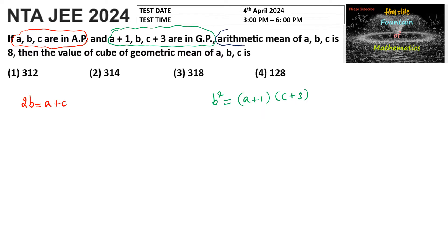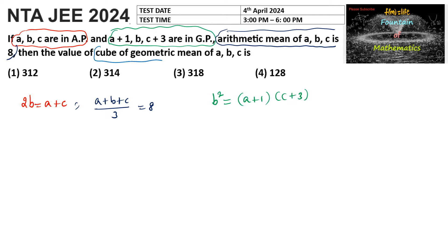Next, it is also given that the arithmetic mean of a, b, c is 8. So we can write the arithmetic mean of three numbers as (a plus b plus c) upon 3 is equal to 8. The question asks for the cube of the geometric mean of a, b, c.